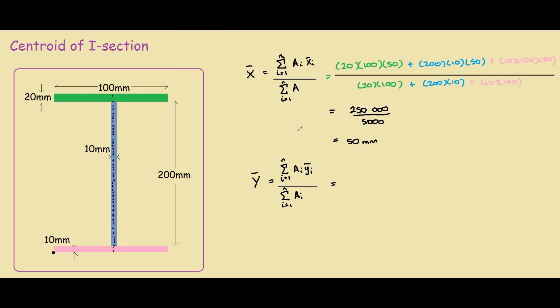For the green part, our area is again 20x100, and the centroid from my reference point is 10 plus 200, so 210, and then plus half of 20, so it's 220.